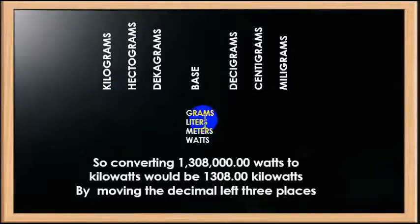If we were going to change it into centiwatts, then we would go over one, two decimal points to the right. But in this case, the decimal point slides over one, two, three spaces, and then that becomes one thousand, three hundred and eight kilowatts.